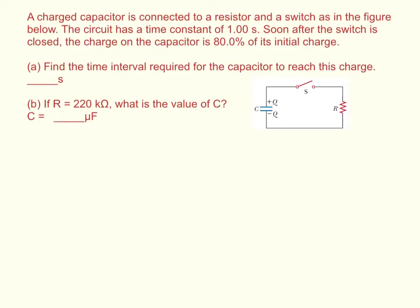A charged capacitor is connected to a resistor and a switch as in the figure below. The circuit has a time constant of one second. Soon after the switch is closed, the charge on the capacitor is 80% of its initial charge. Part A: find the time interval required for the capacitor to reach this charge. Part B: if the resistance is 220 kilo-ohms, what is the value of C?